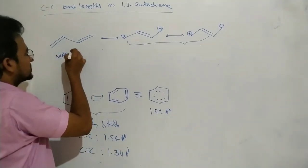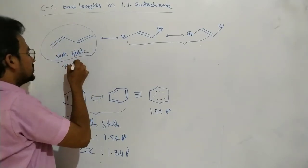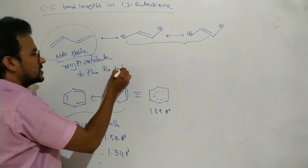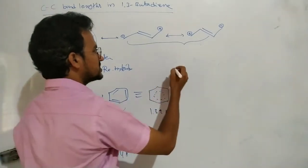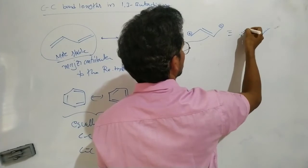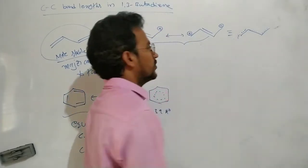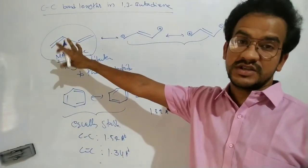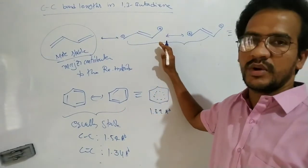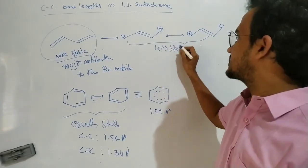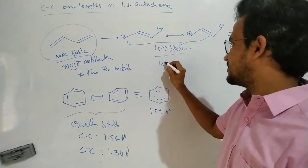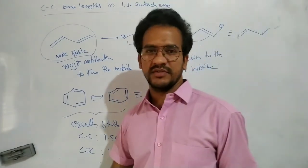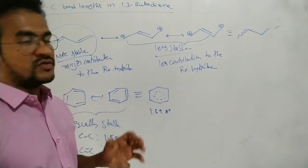The neutral structure is a more stable resonant structure — it is a major contributor to the resonance hybrid. The resonance hybrid of 1,3-butadiene resembles the more stable resonance structure. The other two structures are less stable because they have less number of covalent bonds and there is charge separation. That's why these resonance structures have very less contribution to the resonance hybrid. That's why in this case all carbon-carbon bonds are not equal.